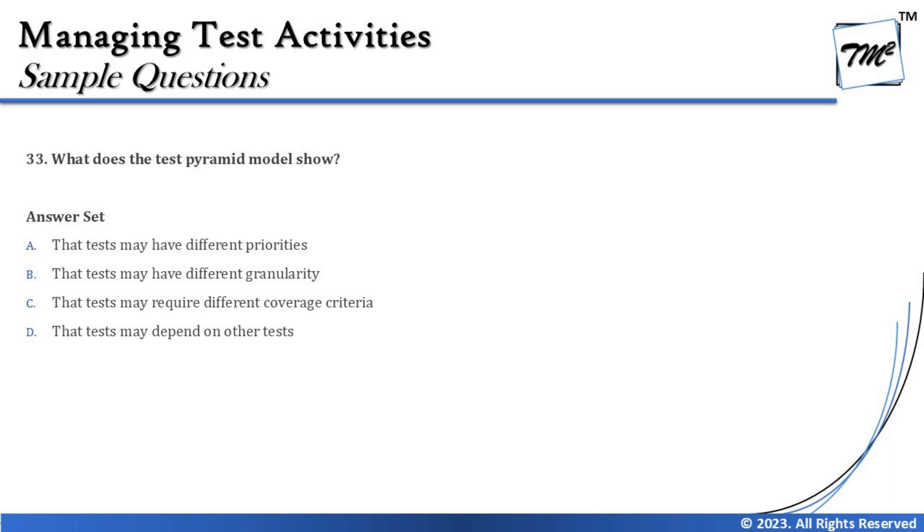So the effort is on two important things. Let's quickly look at the options. Option A says the tests may have different priorities. Priorities are important, but the point is the test pyramid does not deal with prioritization. I can determine what to run at unit level or integration level, but the pyramid does not talk about that.